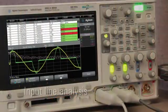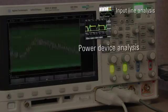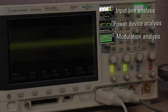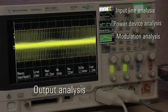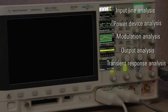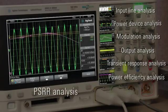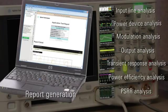Other than the Power Loss measurement of the switching transistor, the Power Measurements option for the 3000X series oscilloscope offers a wide variety of measurement features such as input line analysis, power device analysis, modulation analysis, output analysis, transient response analysis, power efficiency analysis, TSRR analysis, and report generation.